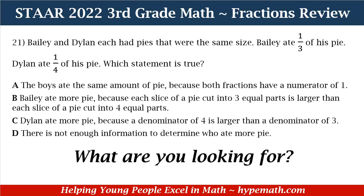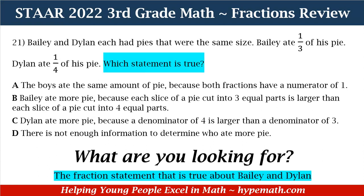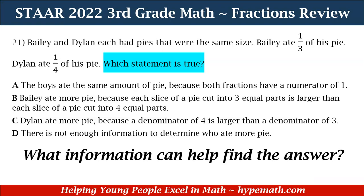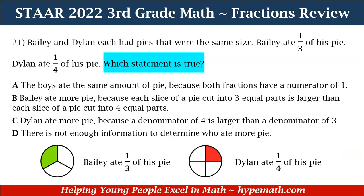The first question we need to ask ourselves is: what are we looking for? We are looking for the fraction statement that is true about Bailey and Dylan. The next question we need to ask ourselves is: what information can help find the answer? The information that can help is that Bailey ate 1 third of his pie — we have a pie example with 1 third shaded on the left-hand side. And on the right-hand side, Dylan ate 1 fourth of his pie — a circle divided into 4 equal parts with only 1 part shaded. This is the information that can help us find the answer.